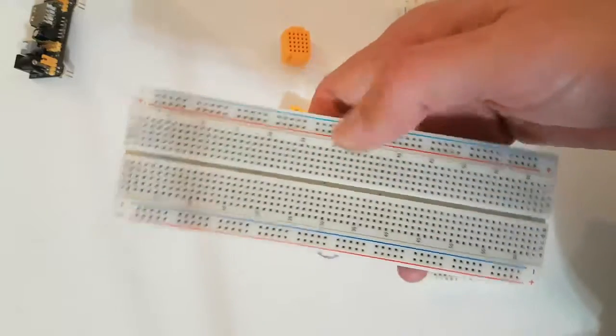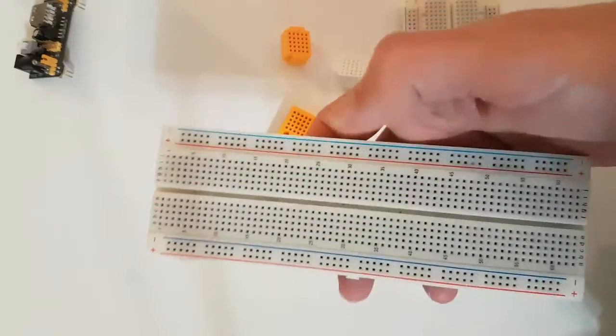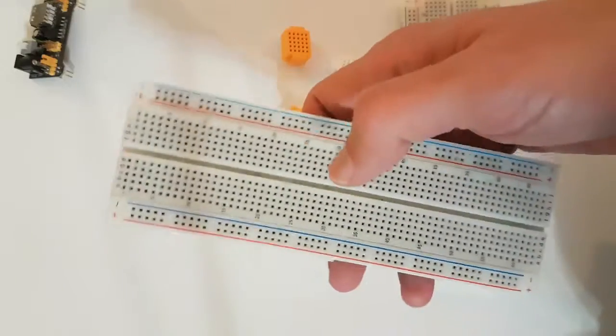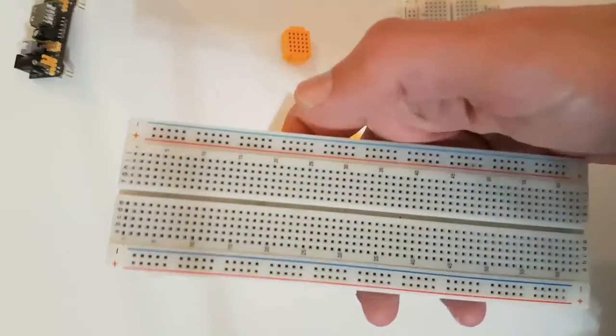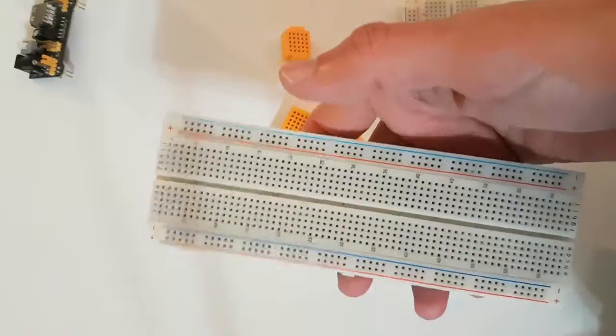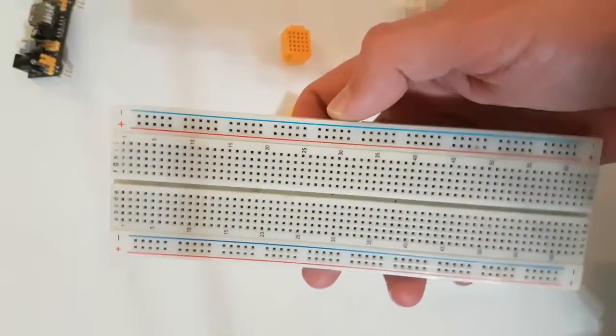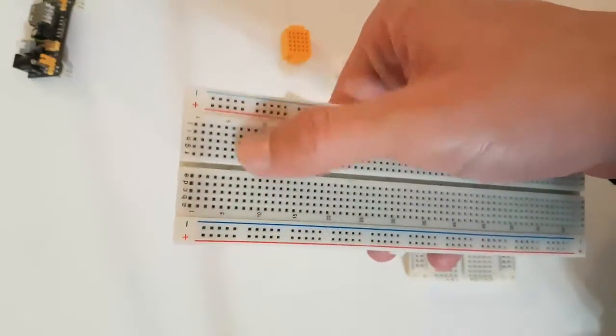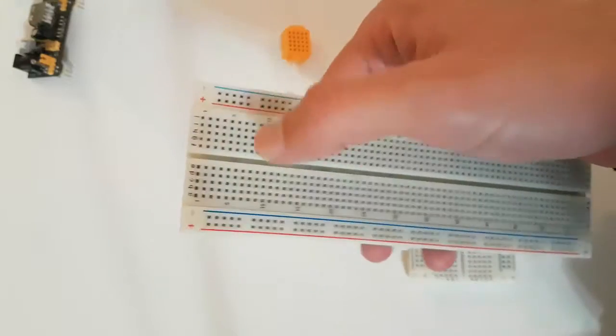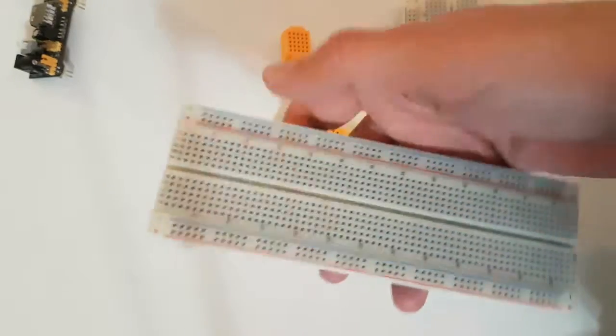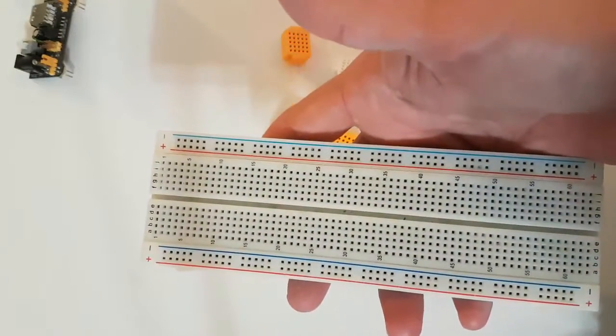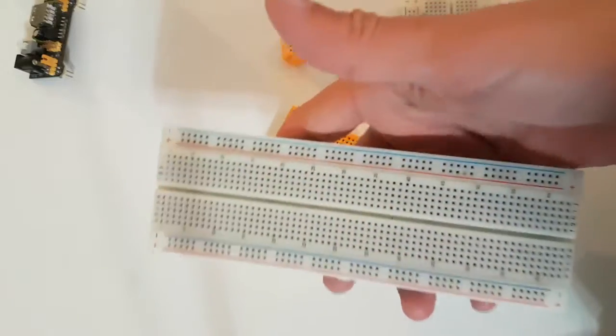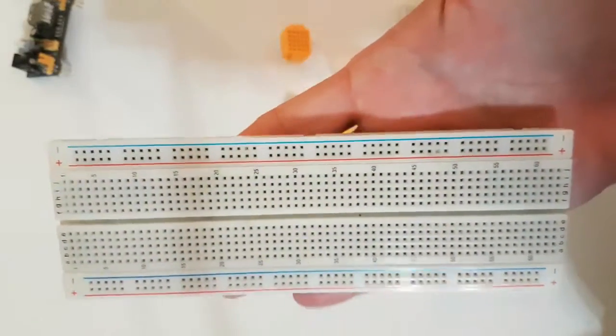The most important thing you need to do is press on the electrical components, because sometimes on cheap breadboards, I assume even on more expensive ones, the connections aren't that good. You really need to press those ICs, LEDs, resistors, or any other components deep into the board.